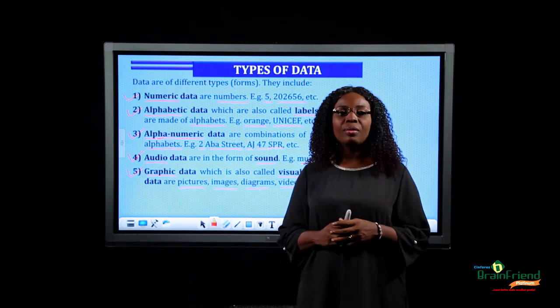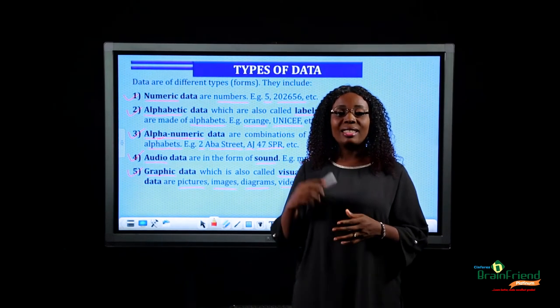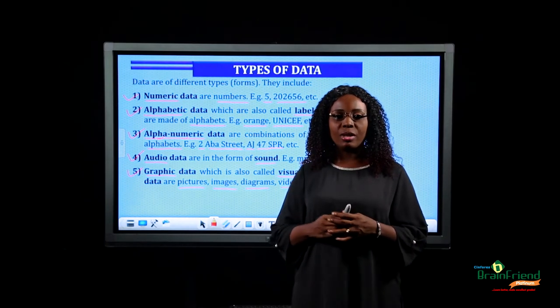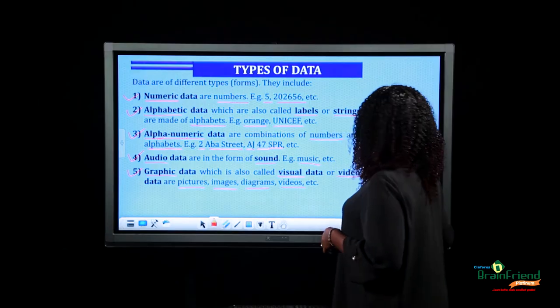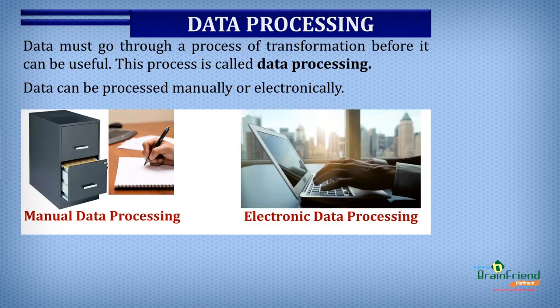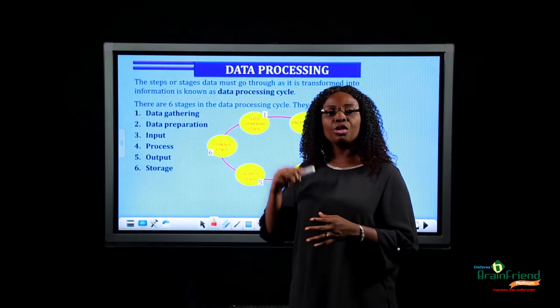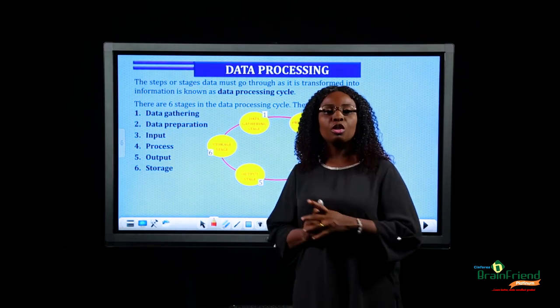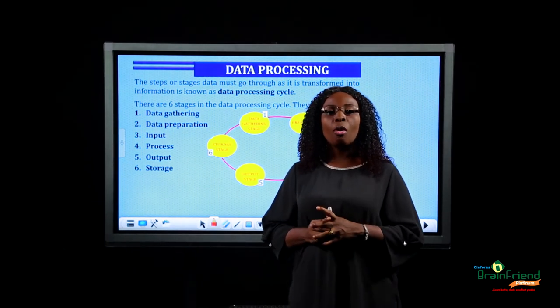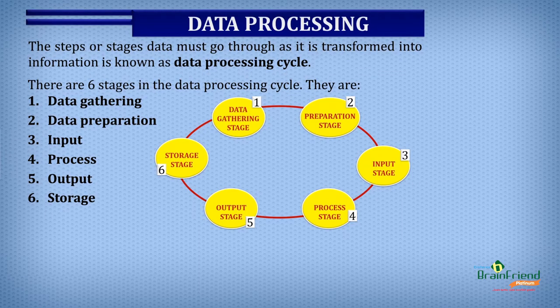Having looked at the different types of data, let's proceed with this lesson by looking at data processing and how data is being processed. Data must go through a process of transformation before it can be useful, and this process is called data processing. It is important to note that data can be processed manually or electronically.